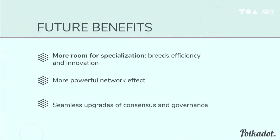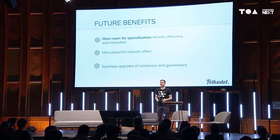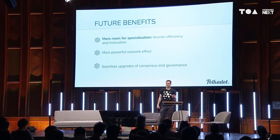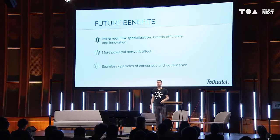Some future benefits of interoperability: there's more room for specialization. If you don't lock blockchain projects into a specific model, they're free to use whichever computation or data formats are most convenient and most suited to the work they're trying to do, which means higher throughput overall. We also get a more powerful network effect, and we get seamless upgrades of consensus and governance — just by having the interoperability framework agree on what the next consensus or governance model is going to look like, we can upgrade it without affecting any of the sub-projects hooked into the framework at all.